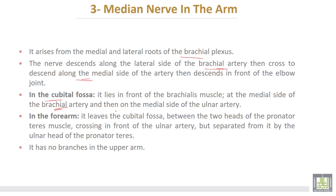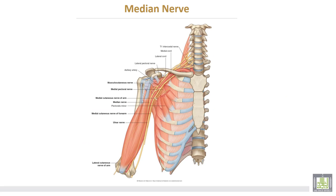In the cubital fossa it lies in front of the brachialis muscle at the medial side of the brachial artery, and then on the medial side of the ulnar artery. In the forearm it leaves the cubital fossa between the two heads of the pronator teres, crossing in front of the ulnar artery but separated from it by the ulnar head of pronator teres. It has no branches in the upper arm. The median nerve arises by two roots from the lateral and medial cords of the brachial plexus.